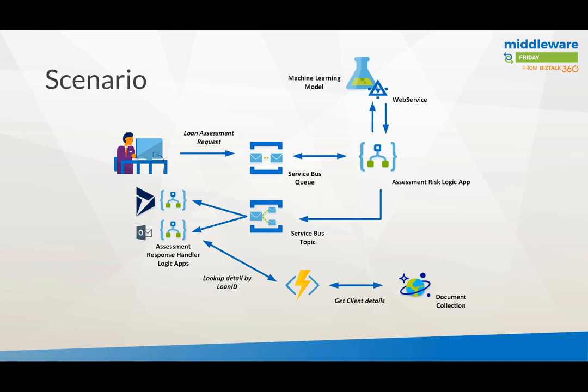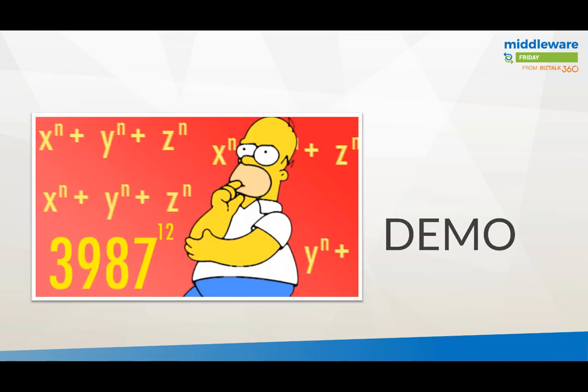Here's the scenario I will demonstrate: a loan assessment request is put as a message on a Service Bus queue, which is read by a Logic App. The Logic App subsequently calls the machine learning model through its exposed web service. The result is pushed to a Service Bus topic, which has multiple subscriptions and multiple handler Logic Apps. One of those Logic Apps calls a function to get more of the client details.